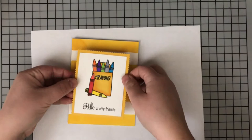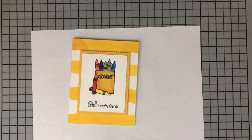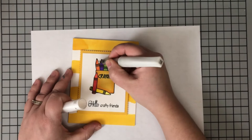Then on the back of that yellow panel that I had with my crayons, I added some dimensional adhesive and I'll place that right down in the center on the front of my card. Now I love the way this looks, but I wanted to add a little something extra.